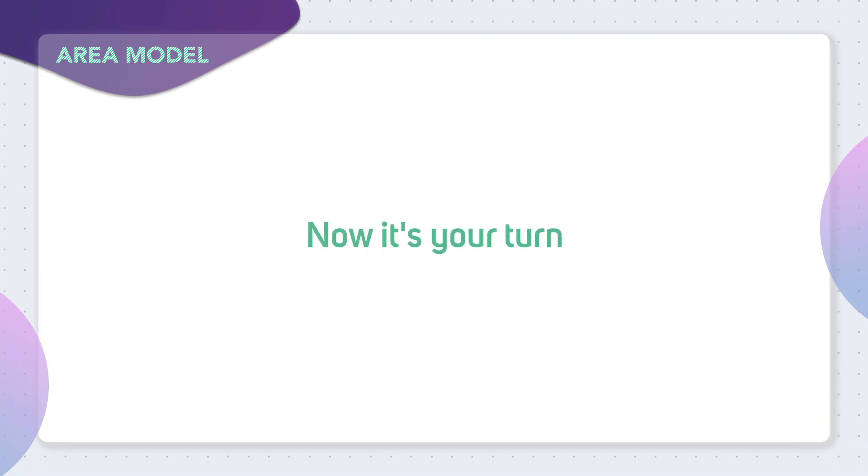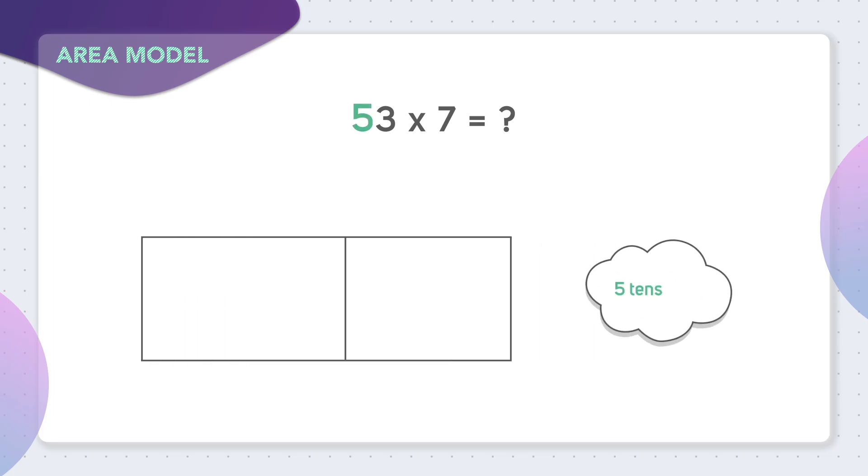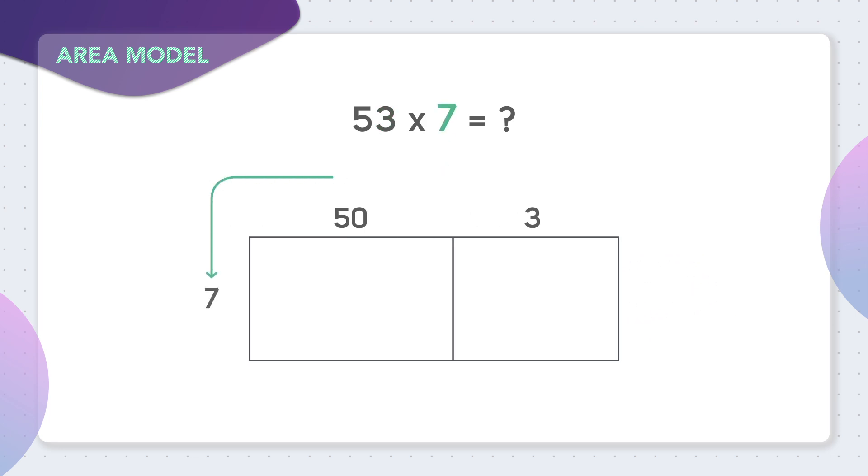Now it's time for you to practice on your own. Use an area model to figure out what 53 times 7 equals. To start this problem, you should have taken your area model and separated the number 53 into 5 tens, or a value of 50, and 3 ones, or a value of 3. And this was all being multiplied by 7.